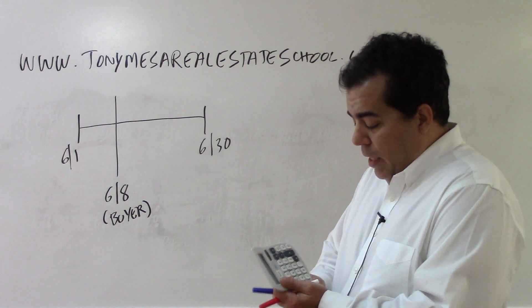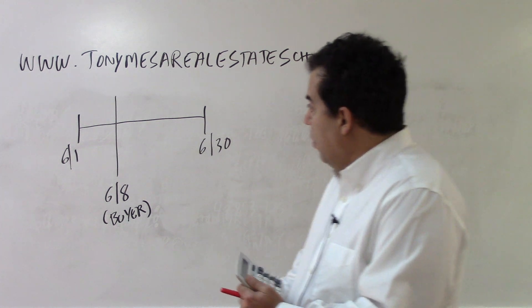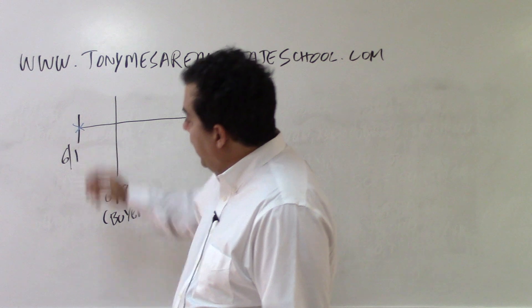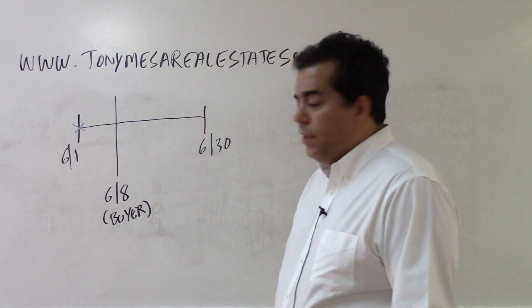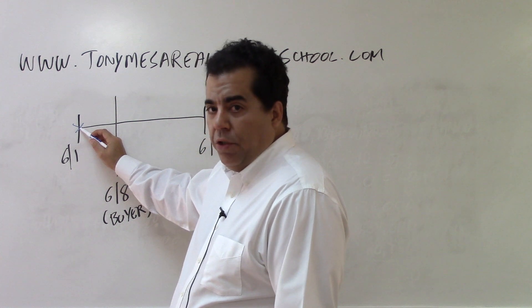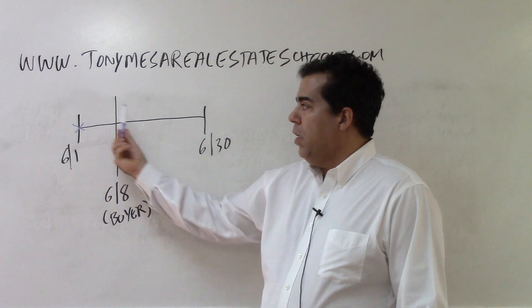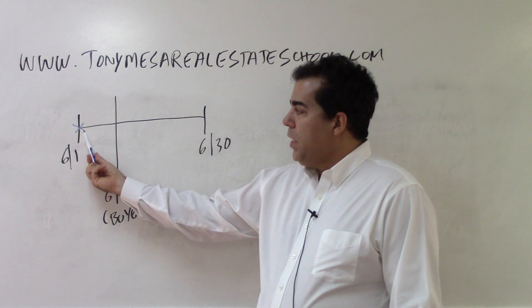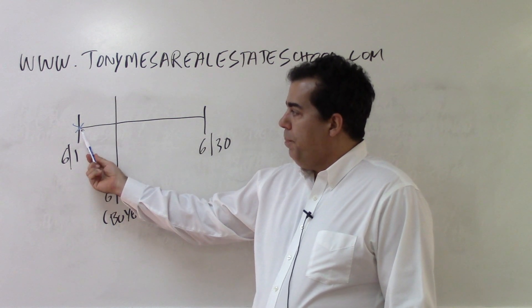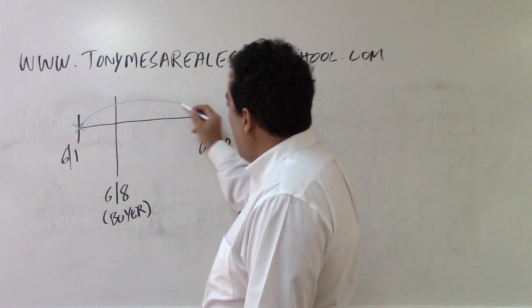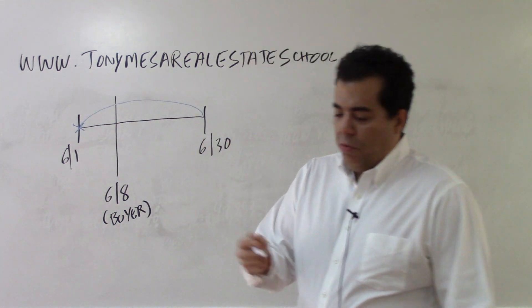But again, if they don't tell you anything, if they're silent about it, the default is the day of closing belongs to the buyer. Now let me pull out the different color dry erase markers here. Here's what's happening on this day right here on June 1: the tenant paid a full $900 to the landlord before the closing. The owner is the seller. After the closing, the owner is the buyer. So when the tenant paid the $900, the tenant paid $900 all to the seller for what? For the entire month.